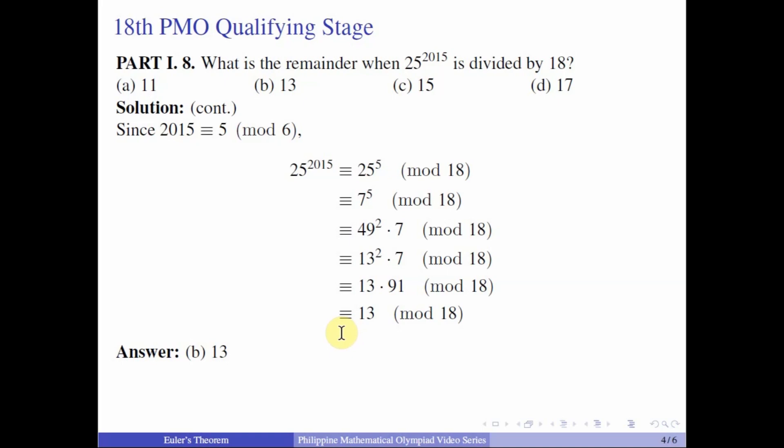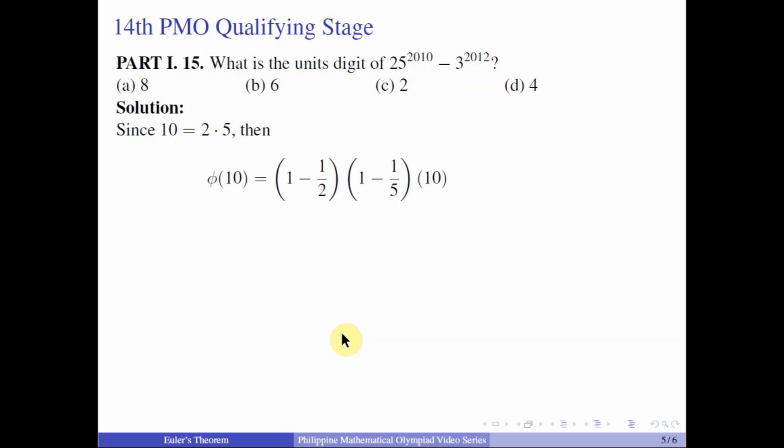A very classic application of this theorem is knowing the last few digits of a certain number. So for example, in 14 PMO qualifying stage part 1 number 15, what is the units digit of 25 raised to 2010 minus 3 raised to 2012? Okay. So when you are trying to get the units digit of a certain number, you just need to get the remainder of this number when divided by 10. And so let us get the prime factorization of 10. So 10 is 2 times 5. So that means that getting the phi of 10 is equal to 1 minus 1 half times the quantity 1 minus 1 fifth times 10, which is equal to 4.